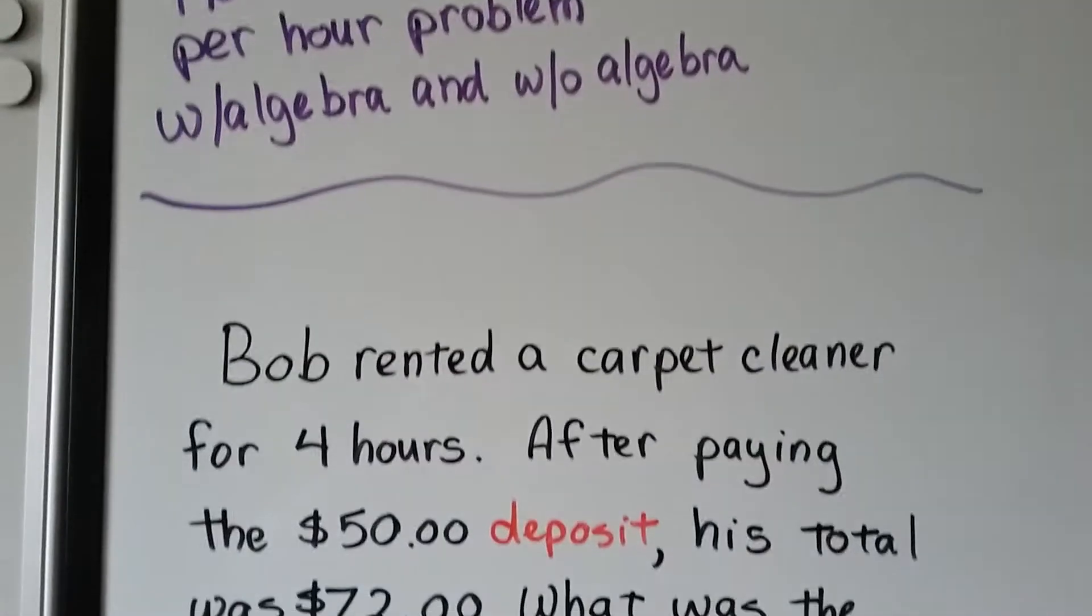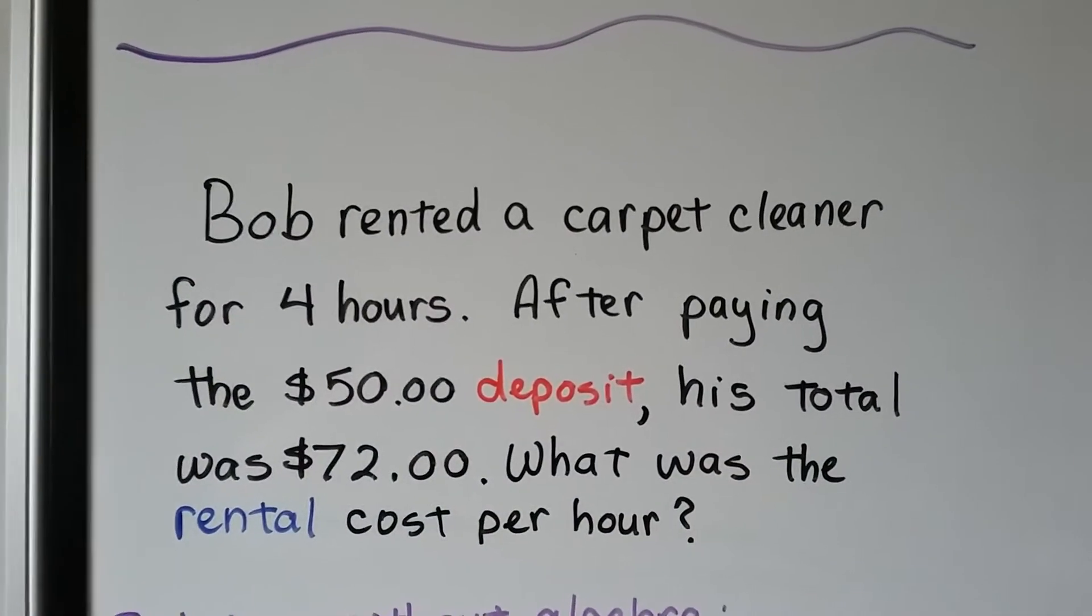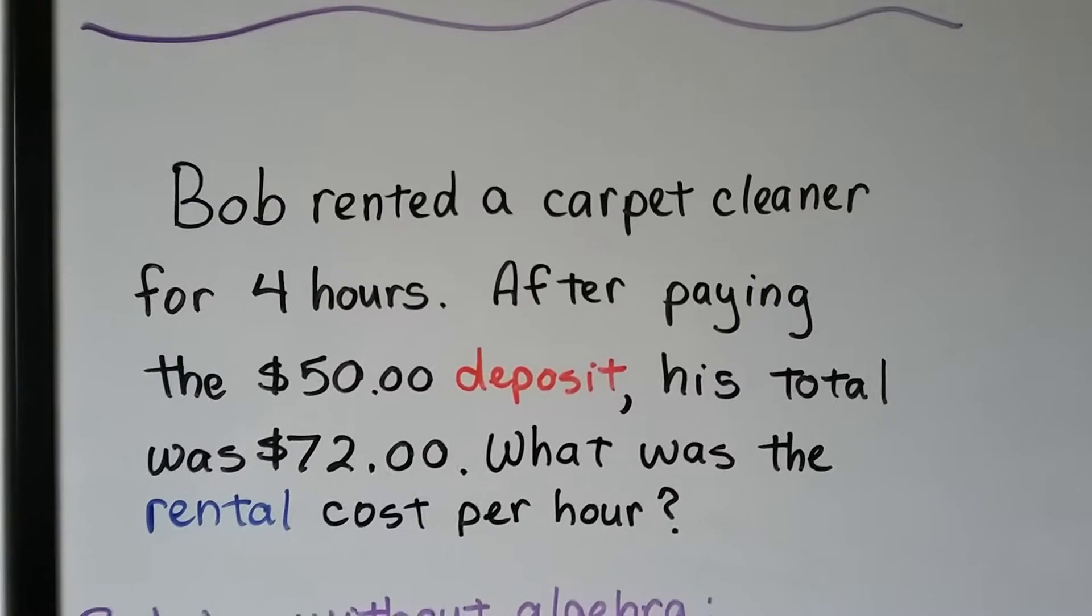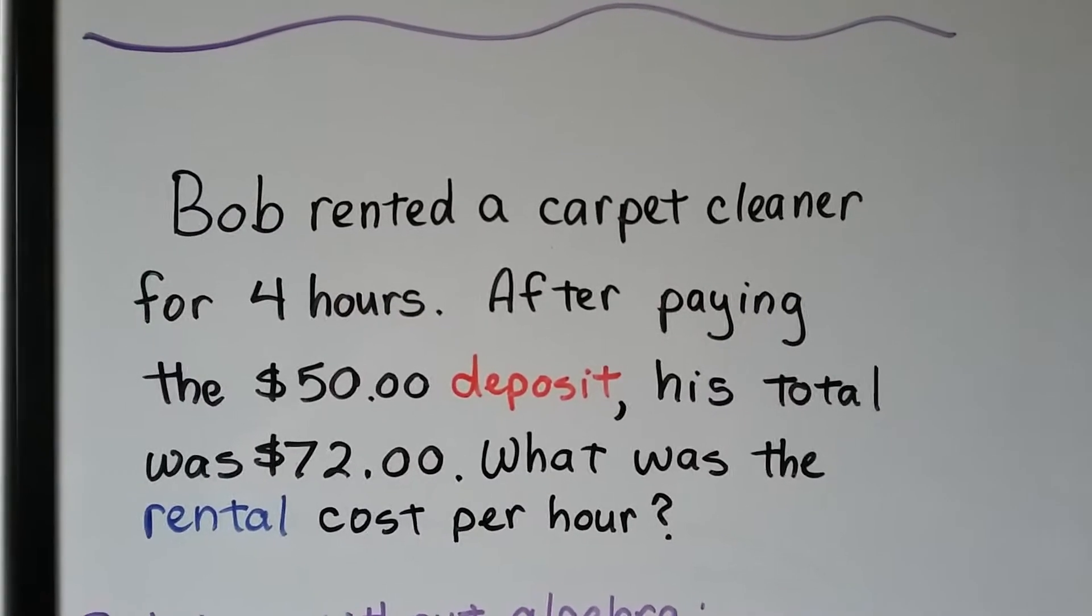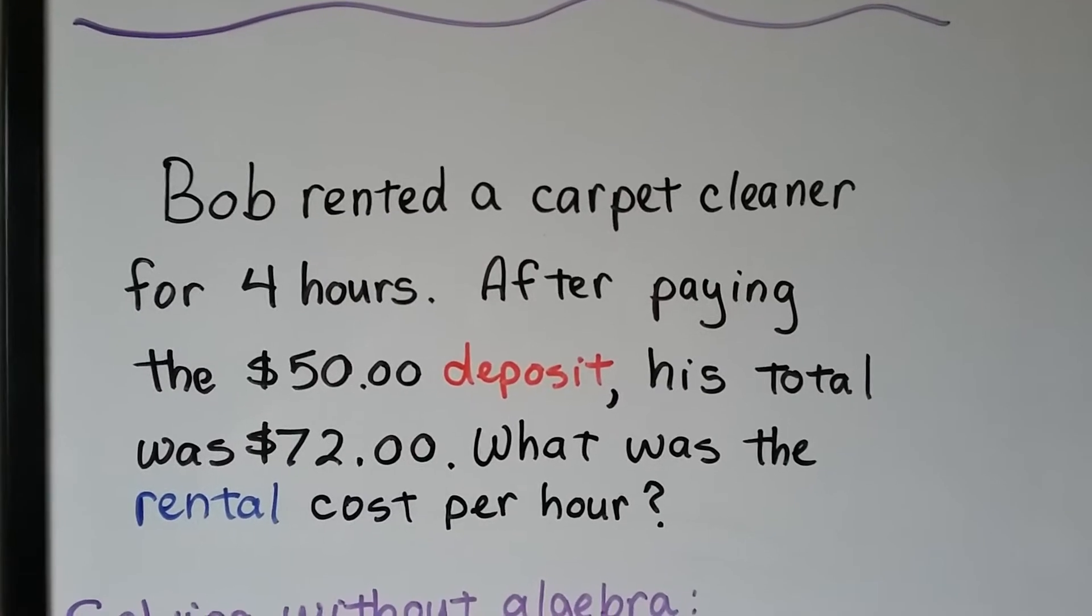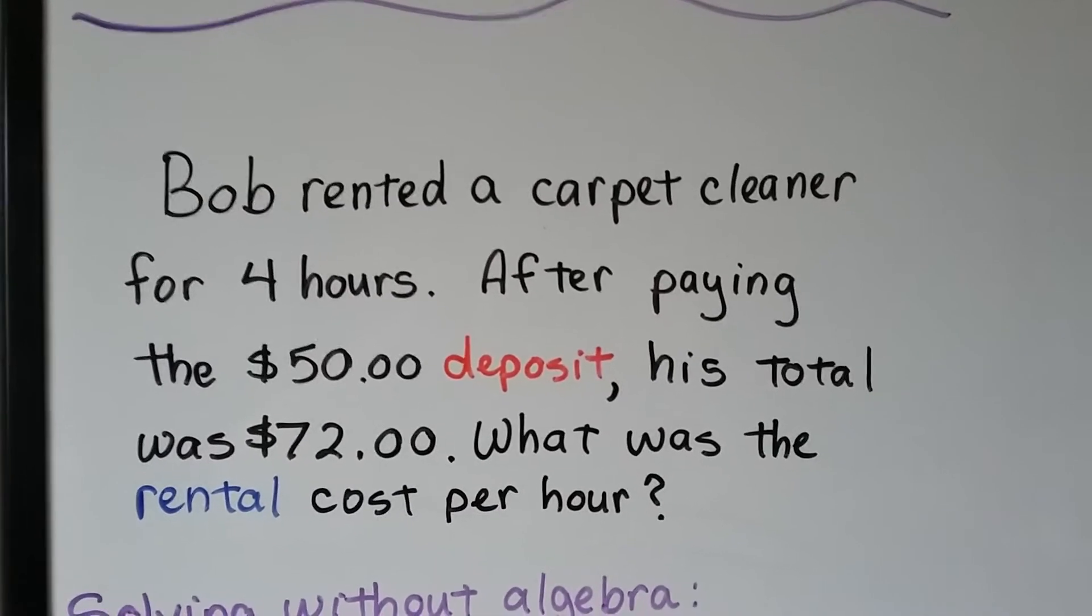So Bob rented a carpet cleaner for four hours, you know a carpet shampooer. After paying the $50 deposit his total was $72. What was the rental cost per hour?